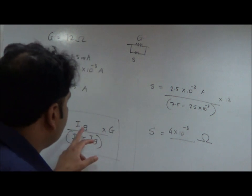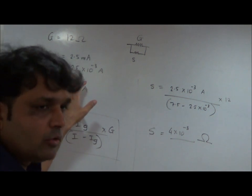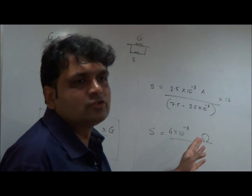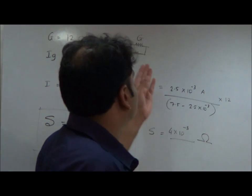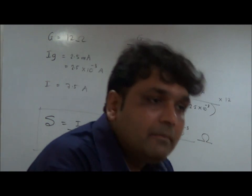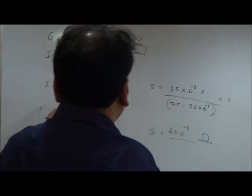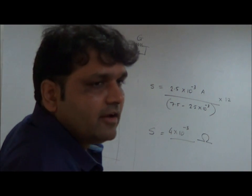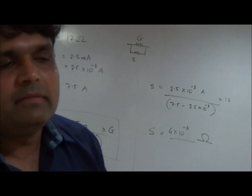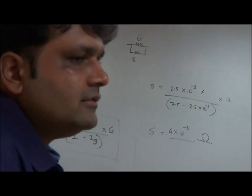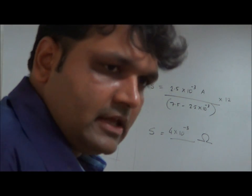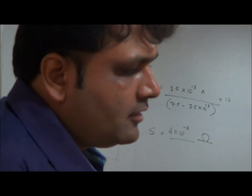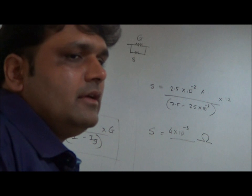The resistance of the galvanometer G = 12 ohm; the full-scale deflection current I_G = 2.5 × 10⁻³ A; the current to be measured I = 7.5 amperes. Substituting into the formula and calculating, we get S = 4 × 10⁻³ ohm. Therefore, the galvanometer can be converted into an ammeter capable of measuring 7.5 amperes by connecting a shunt of 4 × 10⁻³ ohm in parallel with the galvanometer coil.